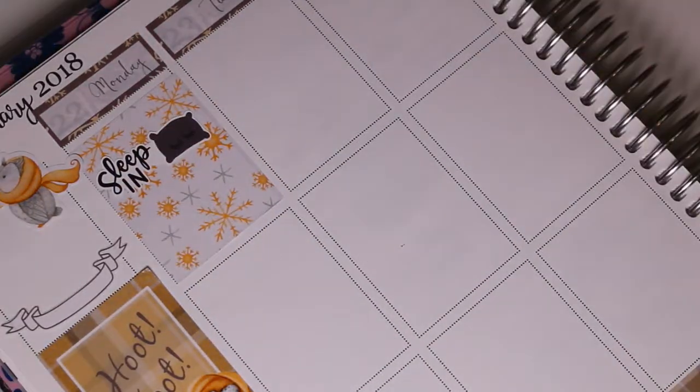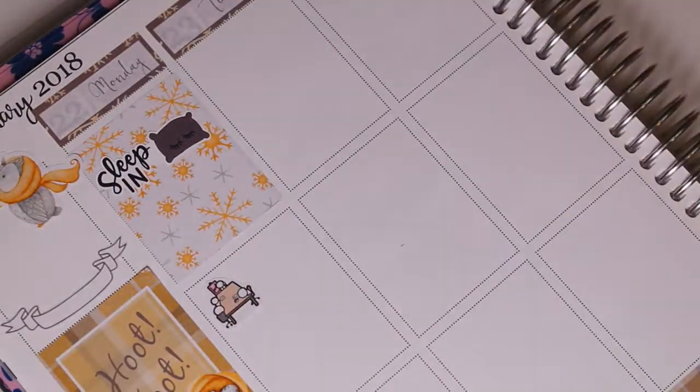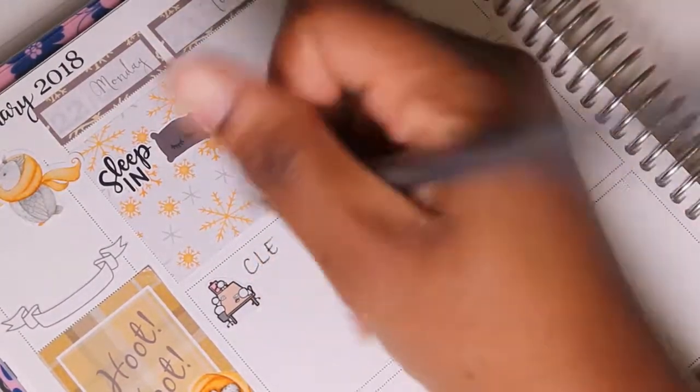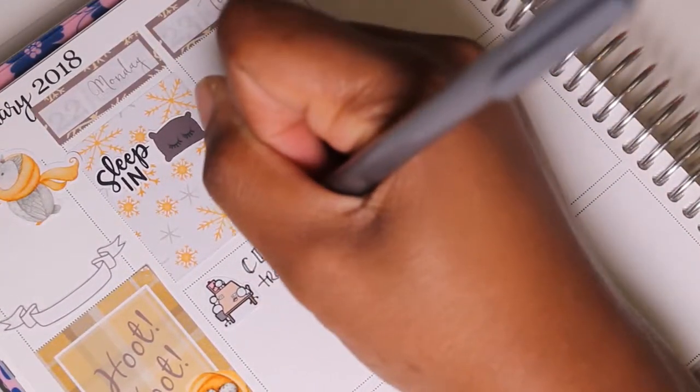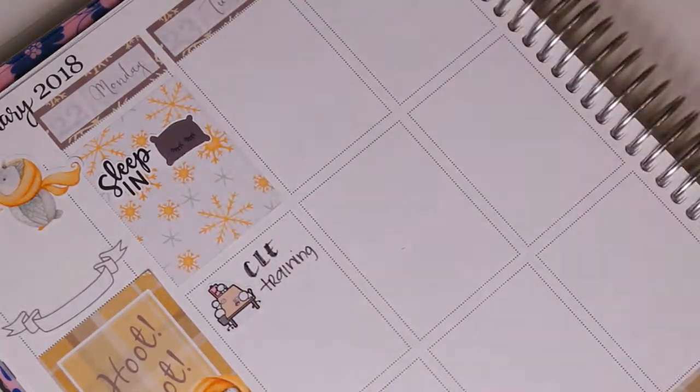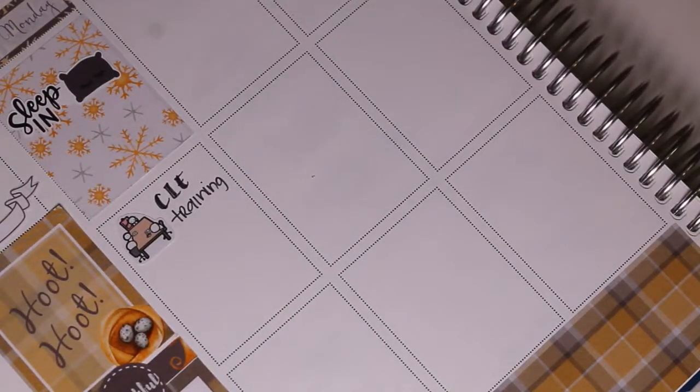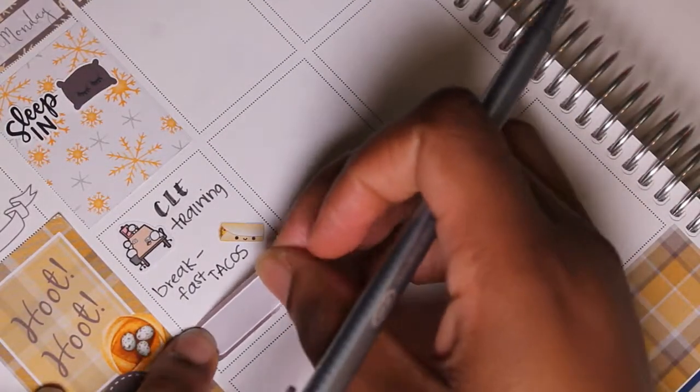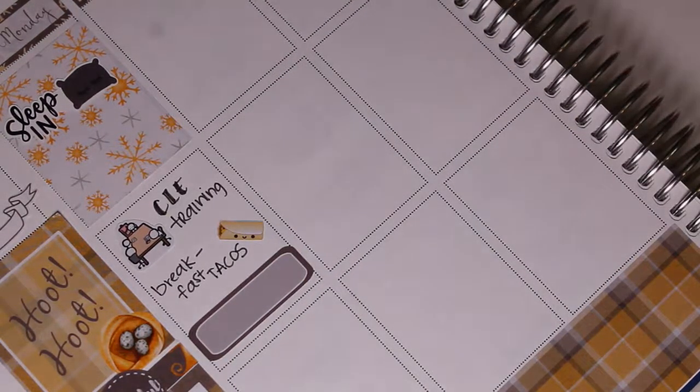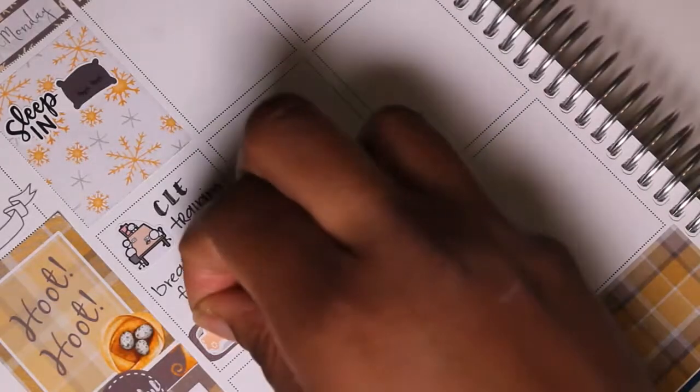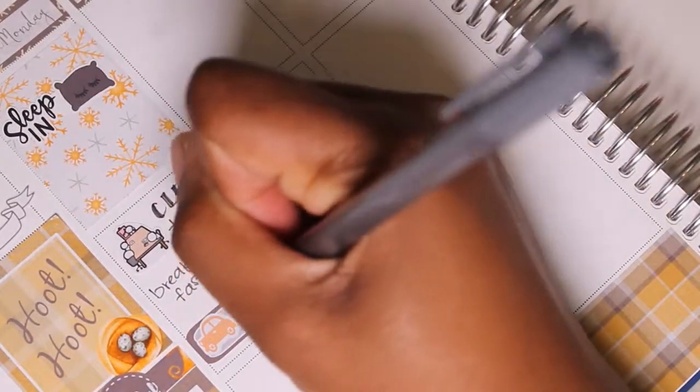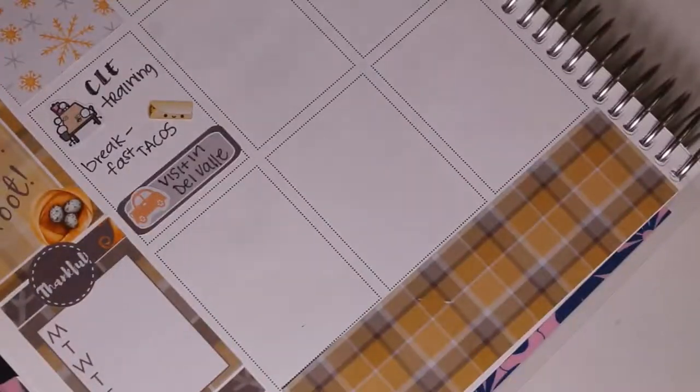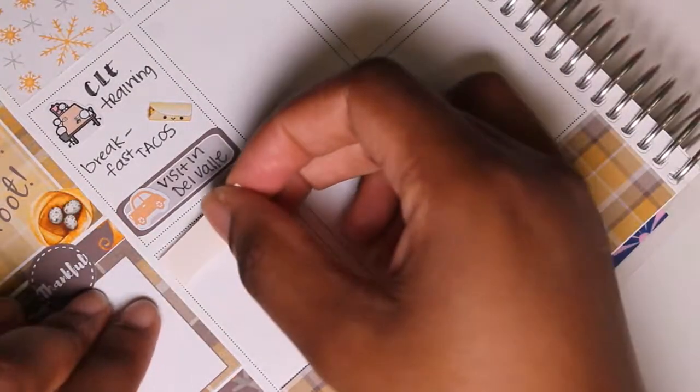Then I moved to Monday and I put down a full box and put down the sleeping sticker from Love Shira. Then I had a CLE at the courthouse so I put down the meeting sticker from the Coffee Monsters Co. And as always, it's definitely a trend. I got some breakfast tacos because I was in the area and that sticker is from Happy Blue Tree. Then I put down a quarter box because I had a visit in Del Valley and that car sticker is from Planner Frenzy.